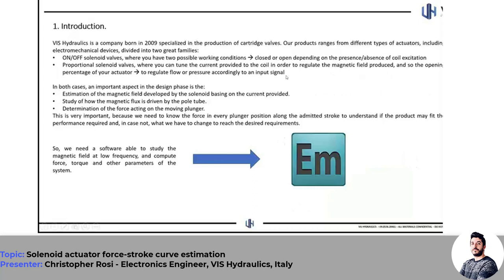VHI Hydraulics is a company born in 2009, specialized in the production of cartridge valves. We offer different kinds of products including electromechanical actuators, which are divided into two main families: on-off solenoid valves and proportional solenoid valves. In an on-off actuator, you have two working conditions — on or off, open or closed — depending on the presence or absence of coil excitation.